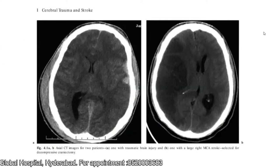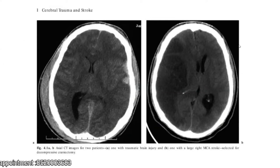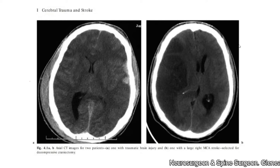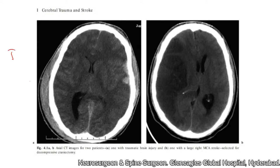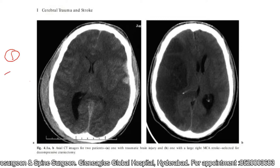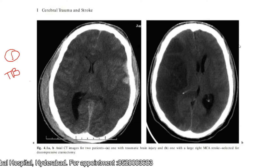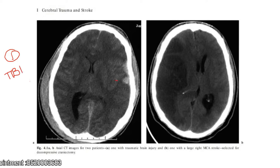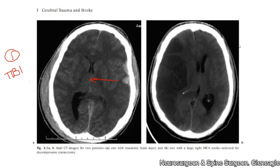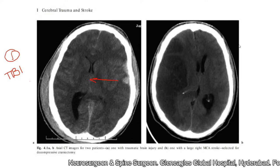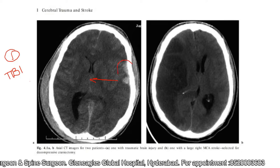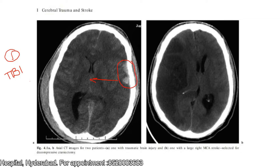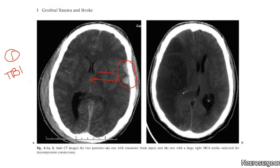Before I go into the operative procedure, let us discuss the classical indications. There are two classical indications for decompressive craniectomy. The first indication is traumatic brain injury — where the midline shift is more than 5 mm, there are signs of uncal herniation, and there is obliteration of the basal cisterns. In this picture, you can see a traumatic brain injury with a small hemorrhage in the right frontal hemisphere, but the edema is out of proportion to the bleed, and there is midline shift to the opposite side.